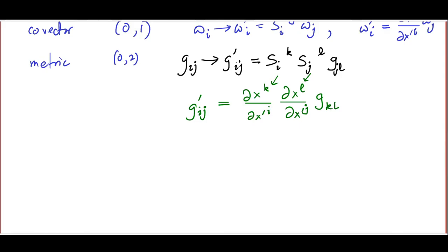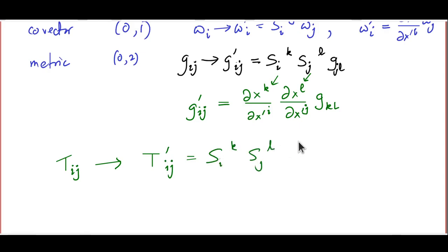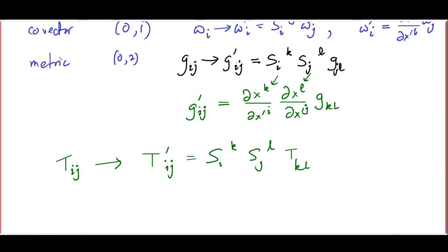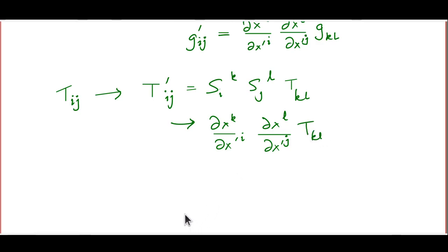Every tensor of rank 0,2 — let us call it T with elements t_ij — transforms under a linear coordinate transformation as t'_ij = S̄_ik S̄_jl t_kl, or for general coordinate transformations as t'_ij = (∂x^k/∂x'^i)(∂x^l/∂x'^j) t_kl. Indeed, we can take this to be the definition of a 0,2 tensor — what was earlier called a second rank covariant tensor.